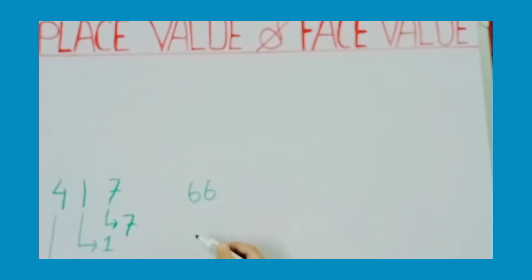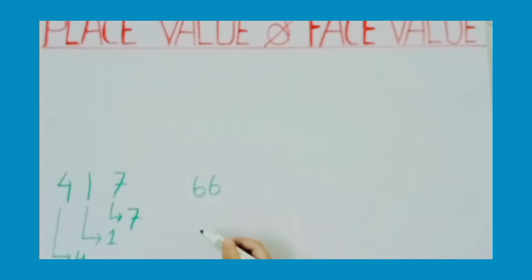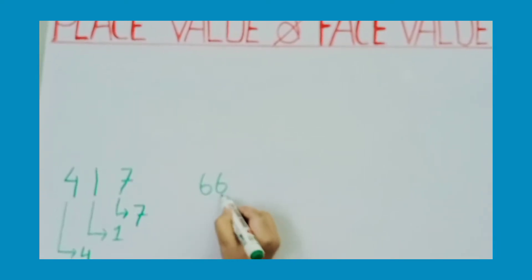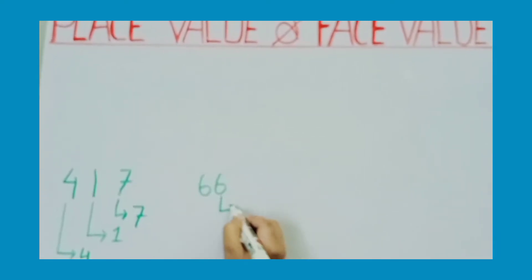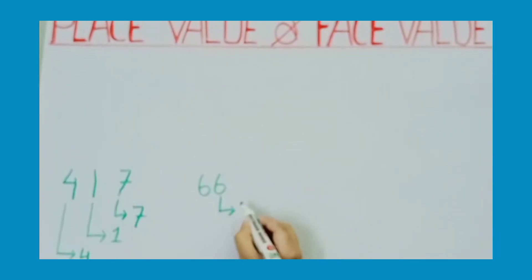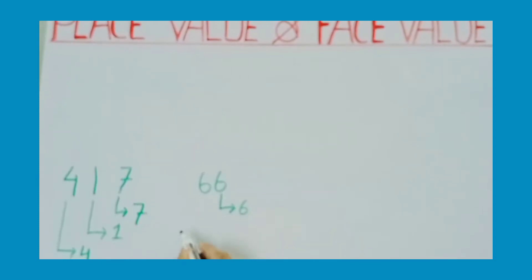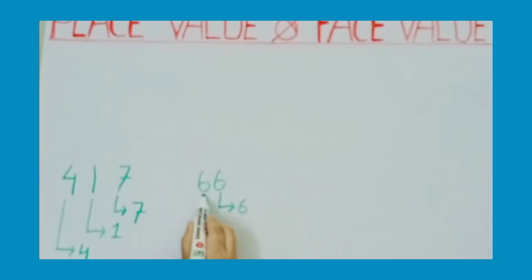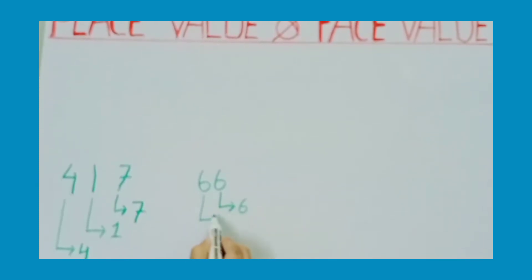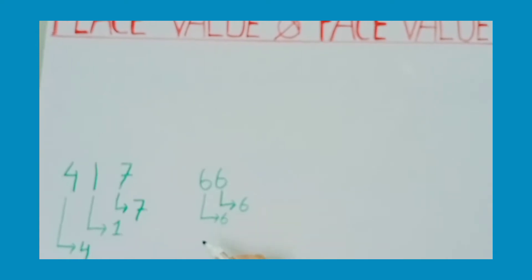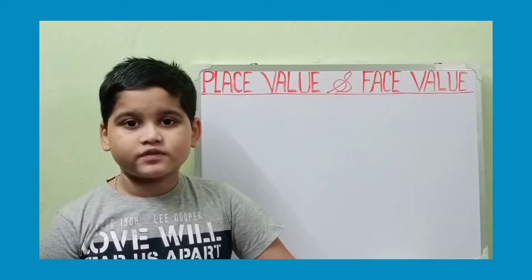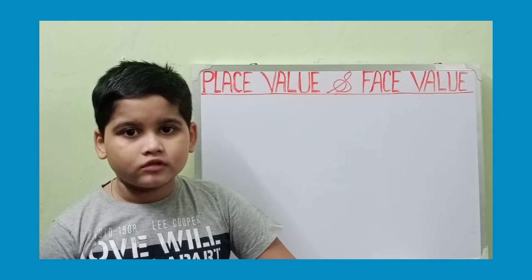So let us see one more example. Here we have the number 66. The face value of this 6 is the number itself — that means 6. And the face value of this 6 is also 6.